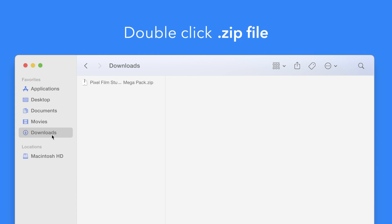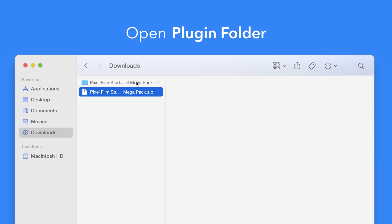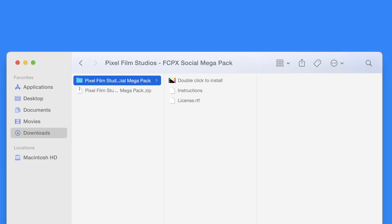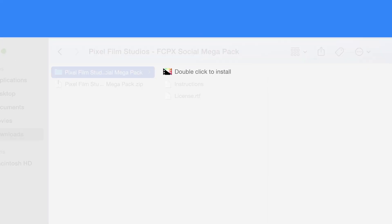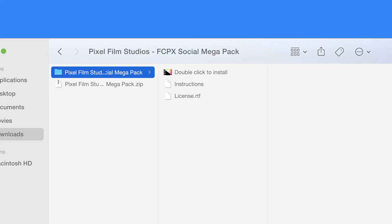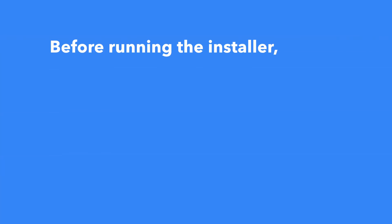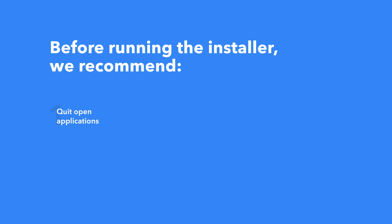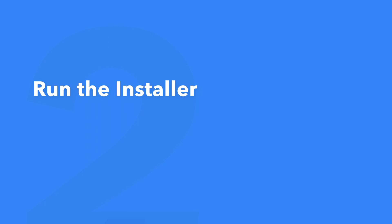Double-click the zip file to open it. In the plugin folder you'll see an installer file named — double-click to install. Before running the installer, we recommend that you quit out of any open applications, eject any connected hard drives, and restart your computer. Once finished, you can return back to the plugin folder and safely run the installer.